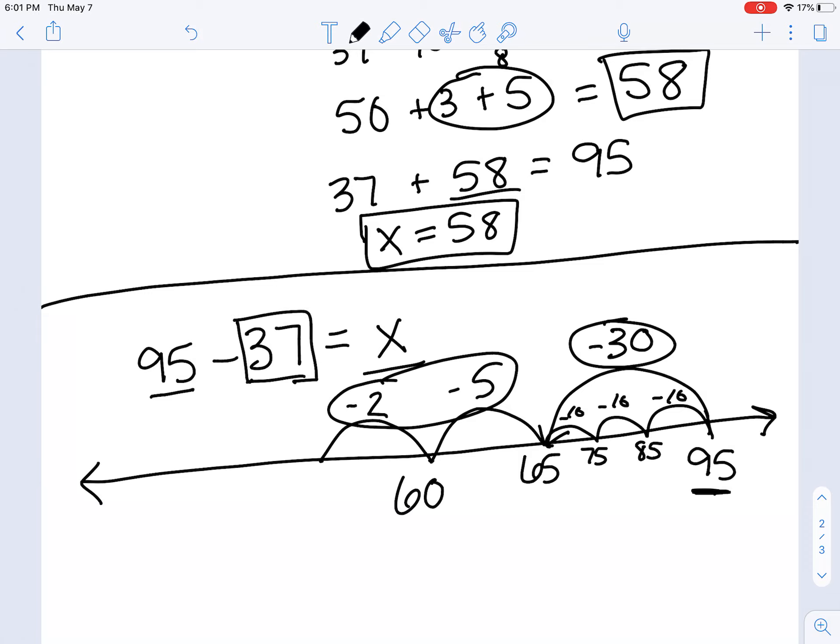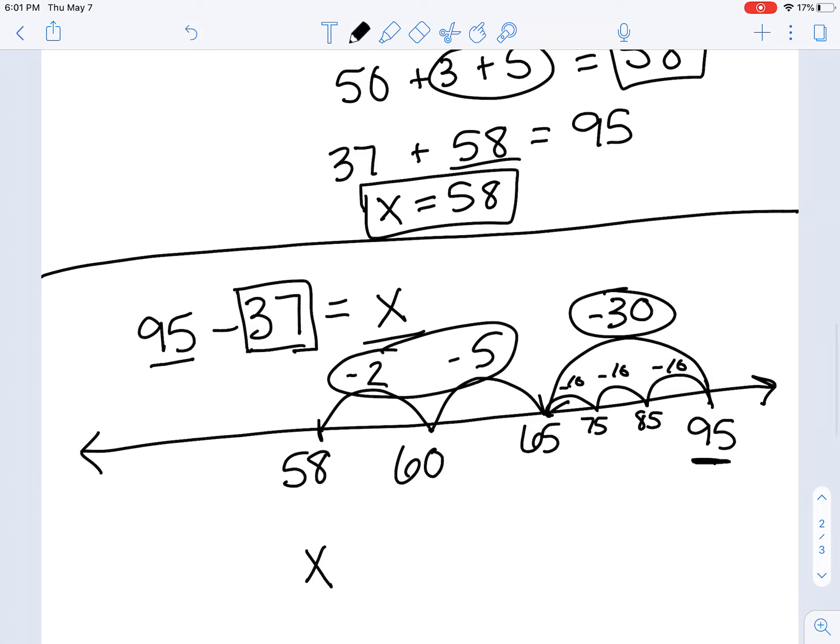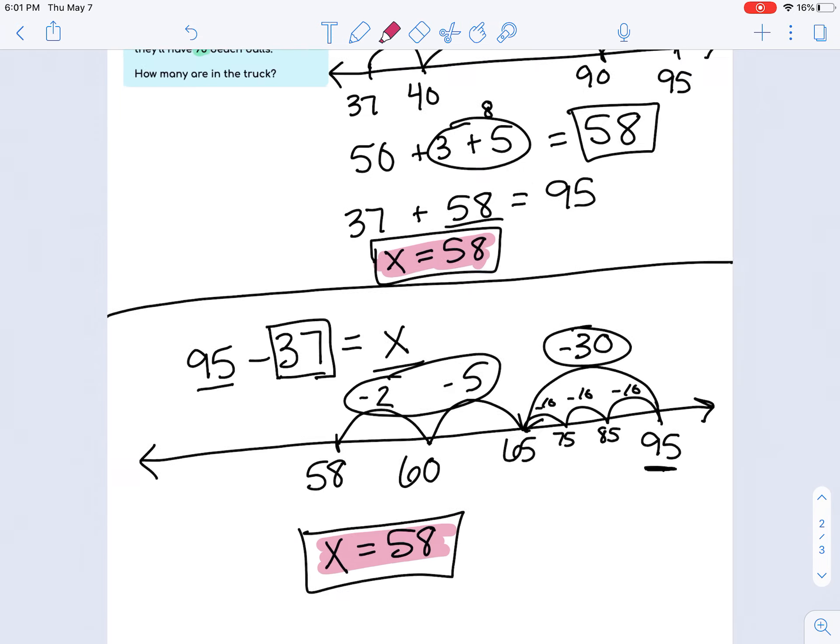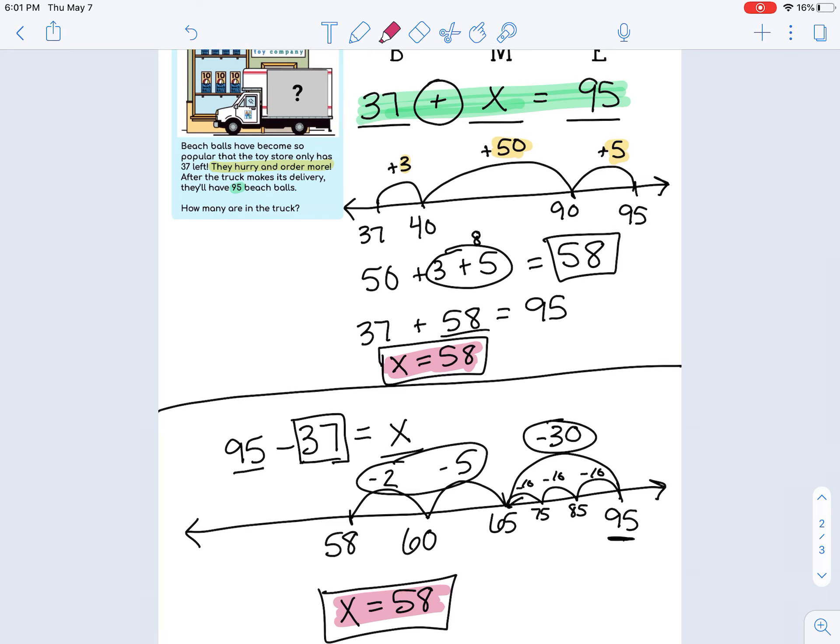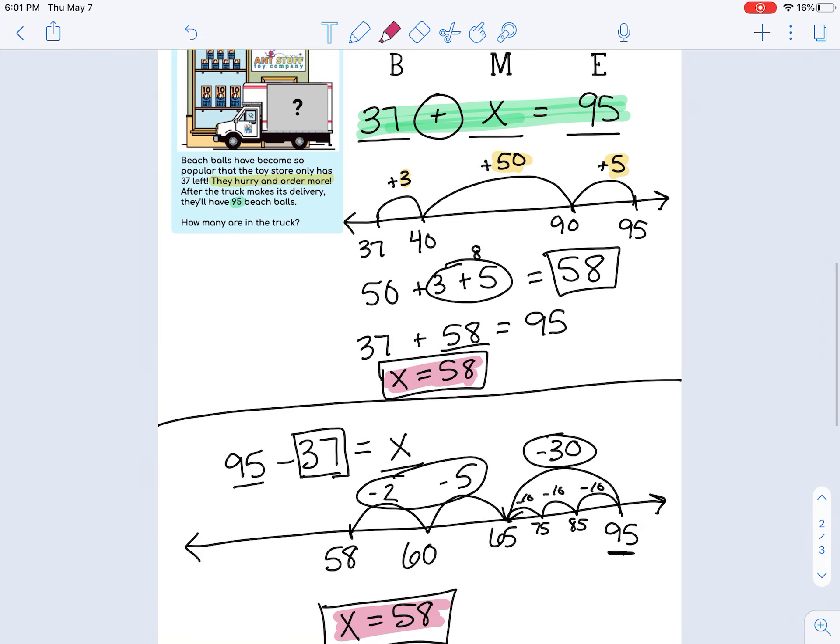60 take away 2 again is 58. So then we can see x still equals 58. X is not changing. Notice I got the same answer for how I did it up here and how I did it down here. These are just two different ways that you could solve this problem. Great job, boys and girls. Keep up the good work.